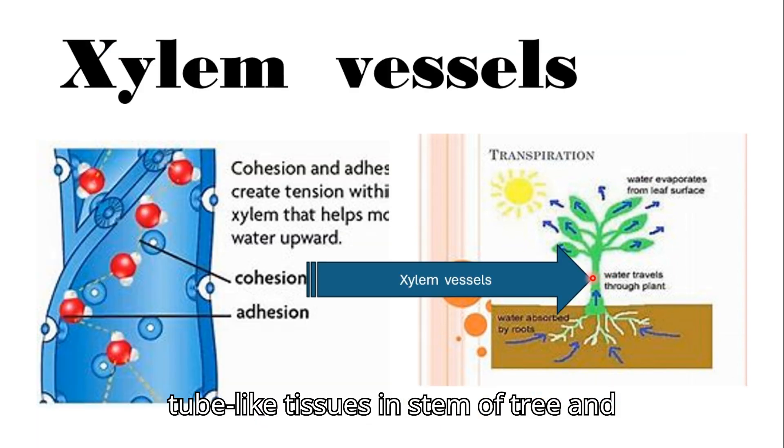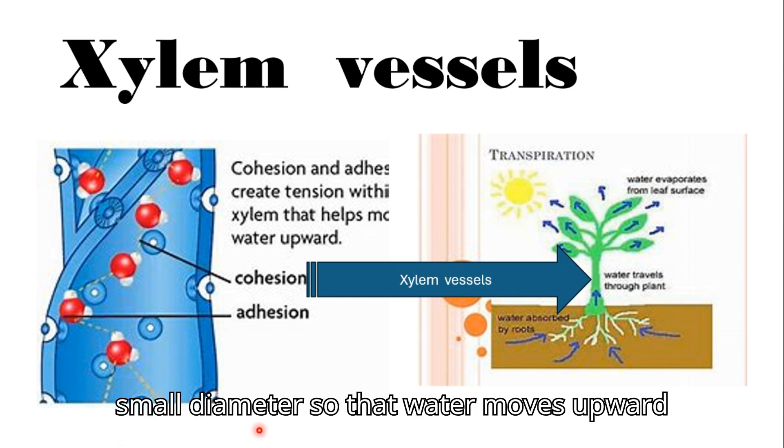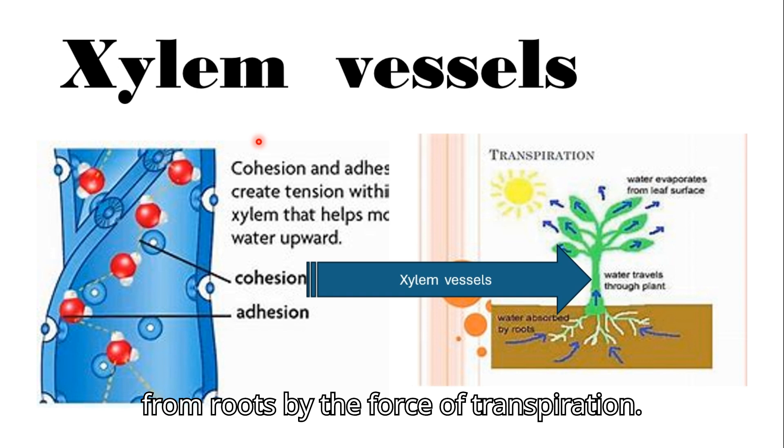Xylem vessels are tube-like tissues in stems of trees and roots. Xylem has small diameter so that water moves upward from roots by the force of transpiration.